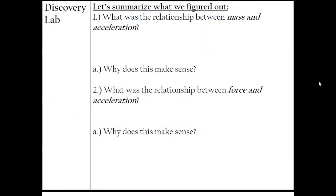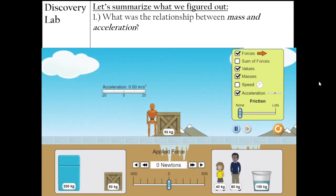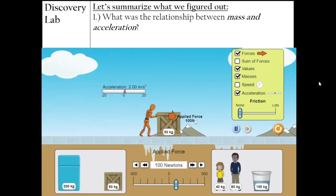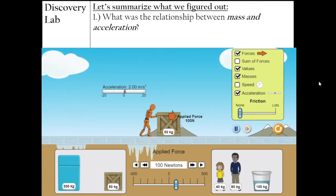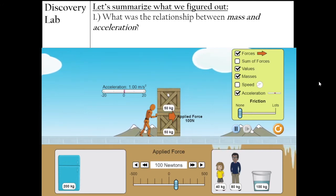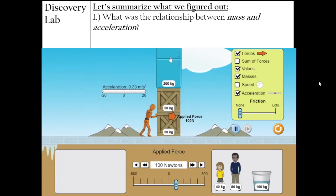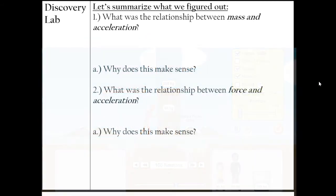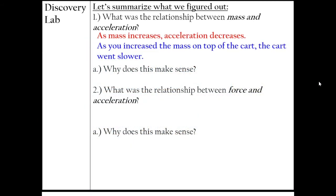Let's talk about what we saw on our simulation and think about what relationship there was between mass and acceleration. When I increased the mass of that object — having two boxes instead of one — my acceleration went down. Therefore, we would say that as mass increases, acceleration decreases. As you are increasing the mass on top of that other box, the box is going to be going slower.